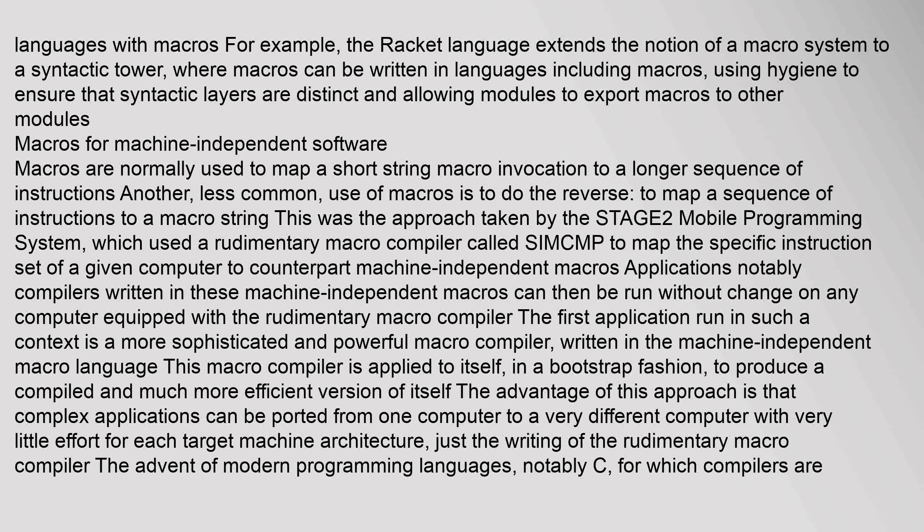Macros are normally used to map a short macro invocation string to a longer sequence of instructions. Another less common use is the reverse: mapping a sequence of instructions to a macro string. This was the approach taken by the STAGE2 mobile programming system, which used a rudimentary macro compiler called SIMCMP to map the specific instruction set of a given computer to machine-independent macros. Applications — notably compilers — written in these machine-independent macros can then be run without change on any computer equipped with the rudimentary macro compiler. The first application run in this context is a more sophisticated macro compiler written in the machine-independent macro language, applied to itself in a bootstrap fashion to produce a compiled, much more efficient version of itself. The advantage is that complex applications can be ported from one computer to a very different one with very little effort for each target machine architecture.